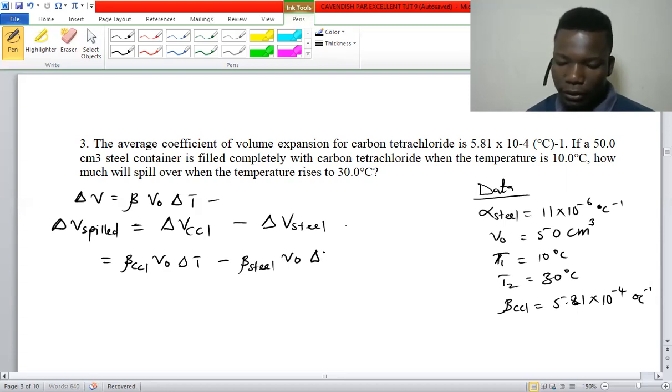Now for steel, there is going to be linear expansion in this steel. So there is a relationship between the coefficient of volume expansion and the coefficient of linear expansion, and that relationship is given by β = 3α.